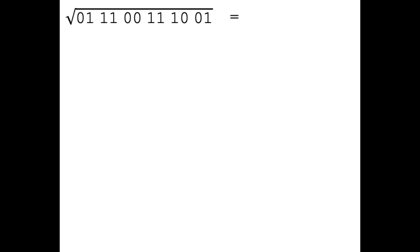The first digit of the square root is always 1. Next, we subtract 1 from the first pair of digits, and then we pull down the next pair of digits.